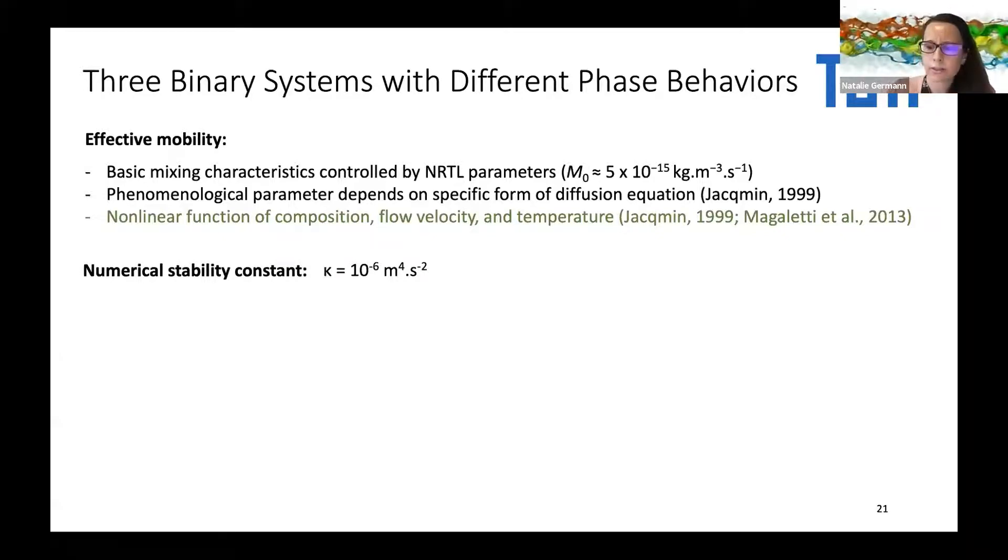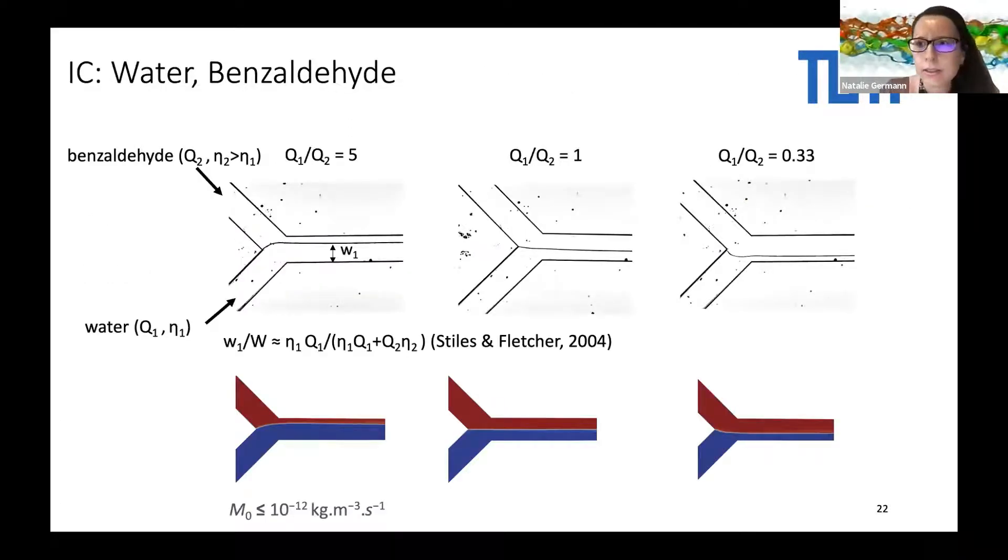Here are a few predictions. Here we have a system with two components, water and benzaldehyde. These two components are nearly immiscible. So we expect the formation of an interface if we bring them together in a microfluidics device. This is also predicted by our model, by our OpenFOAM simulations. We get also the interface right, independent of how we select the volumetric flow rates at the respective inlets.